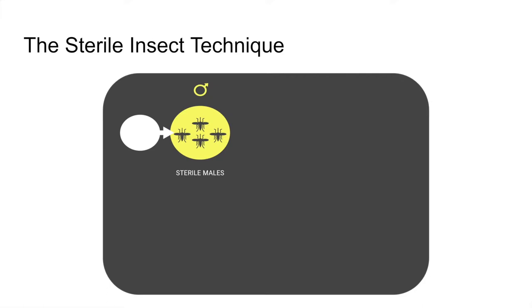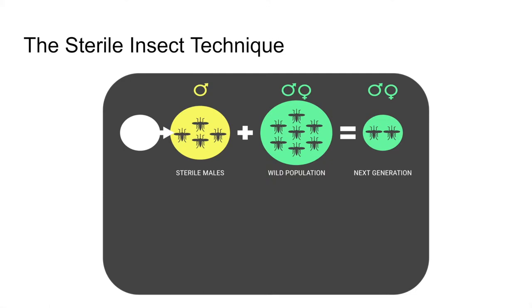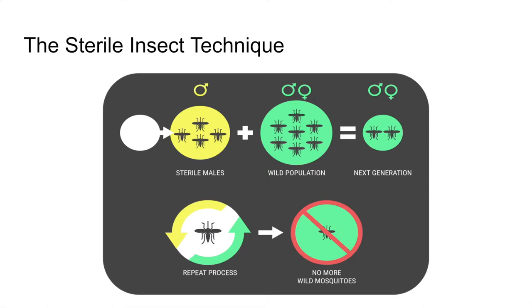Our approach is known as the sterile insect technique. The idea is to release an overwhelming number of sterile male mosquitoes. They'll mate with the wild population, making the next generation smaller. If we continue long enough, the wild population should be greatly diminished or eliminated.